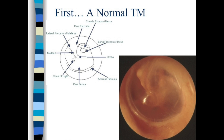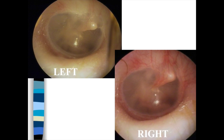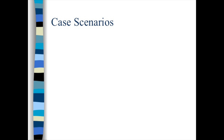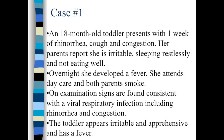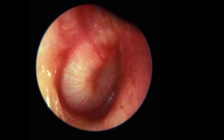The best way to know what a normal ear looks like is to look at a lot of ears. This right tympanic membrane has some inflammation, but still has normal landmarks. Case number one: an 18-month-old toddler presents with one week of rhinorrhea, cough, and congestion. Her parents report she's irritable, sleeping restlessly, and not eating well. Overnight she develops a fever. She attends daycare and both parents smoke. On examination, signs are consistent with a viral respiratory infection. When you look into the ear — this is a classic ear infection: acute otitis media.